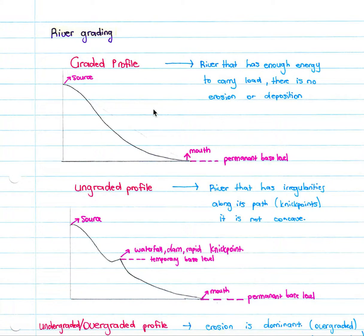When we talk about river grading, we talk about a river being in a graded profile or an ungraded profile. As we can see over here, we have the source of the river and the river mouth, and this is a longitudinal profile of the river. We can see that it has a perfectly uniform and concave shape from source to mouth. Graded profile indicates that the river has enough energy to carry its load and there is no erosion or deposition occurring within the river's course.